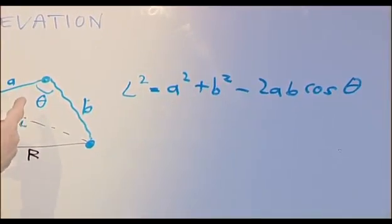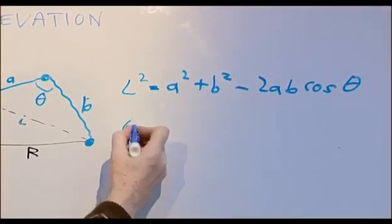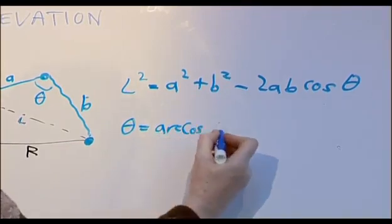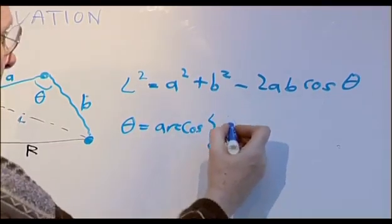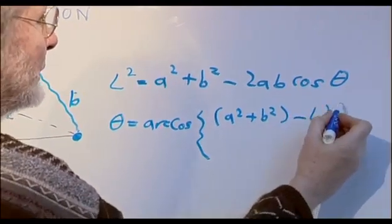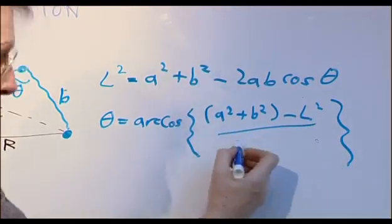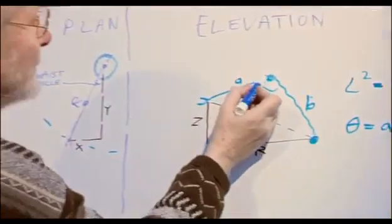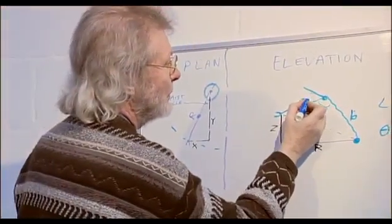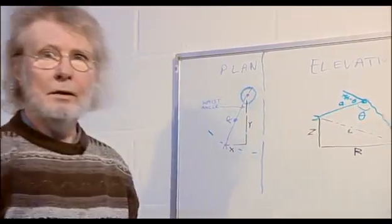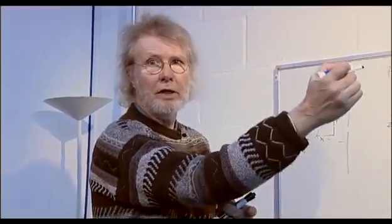We want to know what theta is. So, theta equals the arc cos of A squared plus B squared, minus L squared, all over 2AB. And that gives us theta. The angle of the elbow is, of course, just 180 minus theta. And that shows us how far we need to bend the elbow from otherwise being straight.